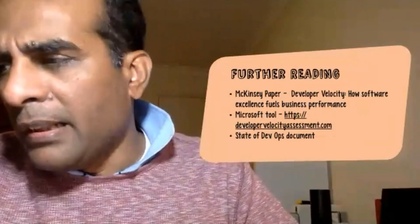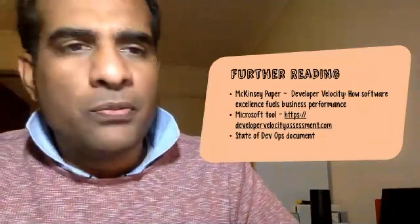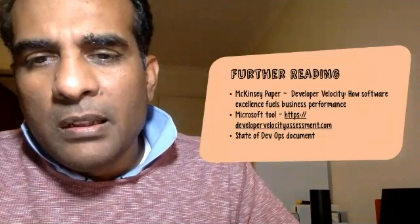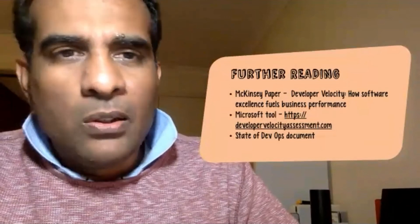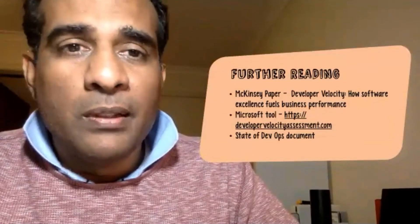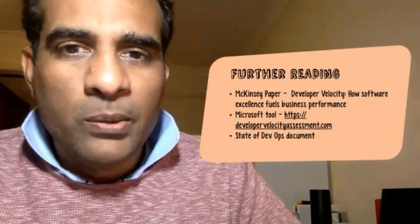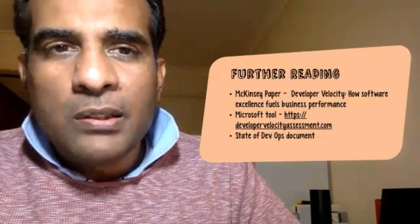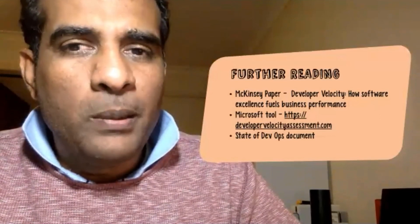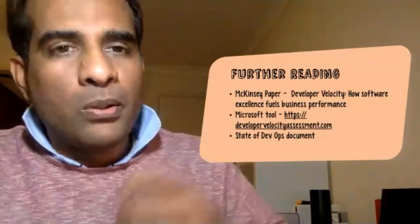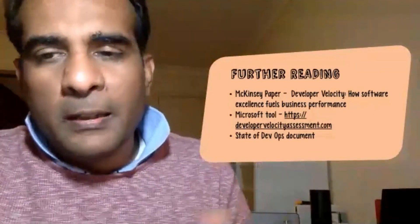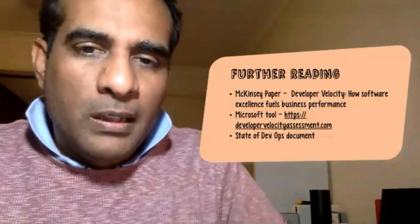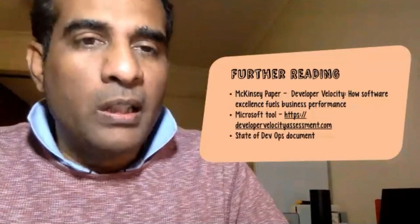The other one I'd recommend is the State of DevOps report. It talks a lot about things like continuous deployment and how we can actually do it. There are lots of things in that document that will help you improve your overall developer velocity and how you manage your teams.